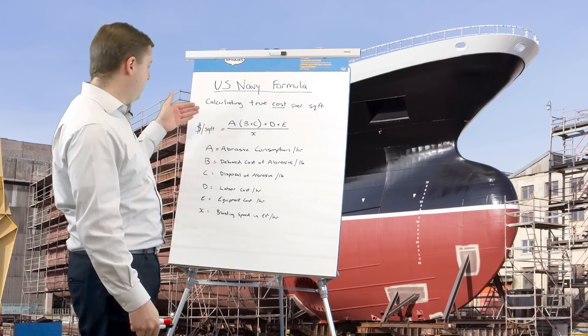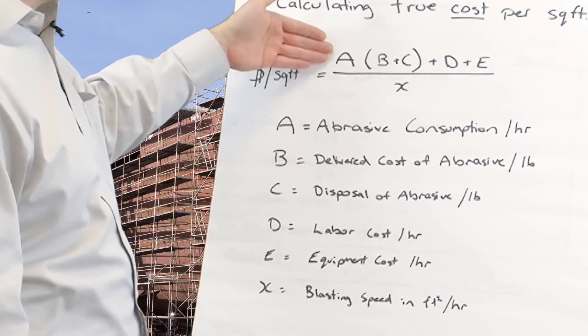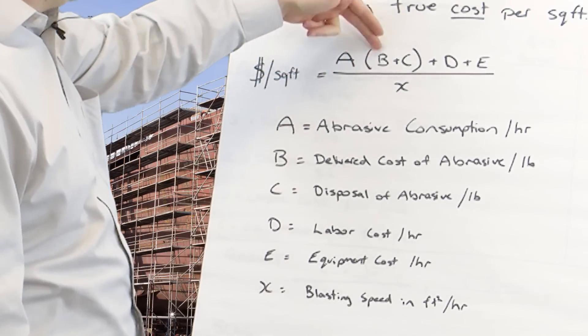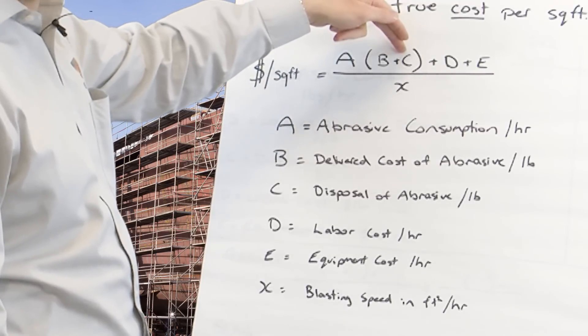This is the calculation. We have the cost. We work out the cost of the abrasive which is the abrasive consumption per hour which is A. B is our delivered cost of the abrasive per pound. C is our disposal cost per pound.